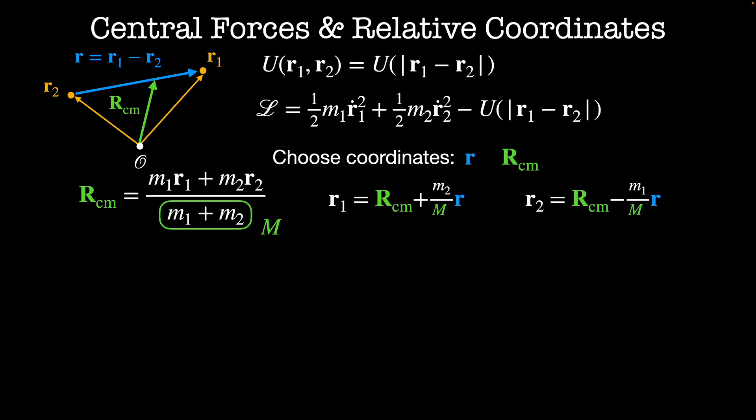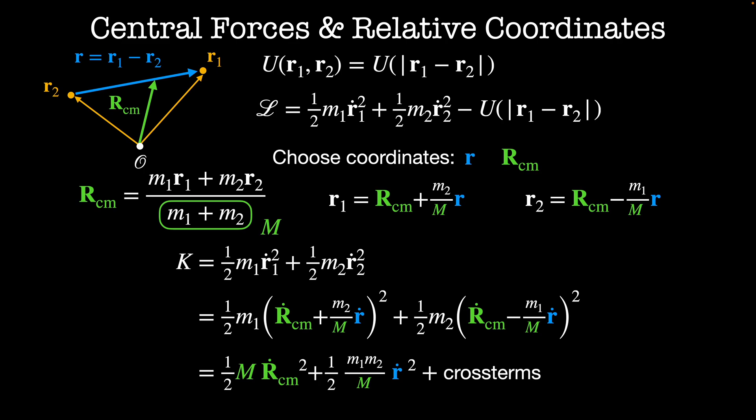Then we'll use these definitions to rewrite the kinetic energy, which was 1/2 m1 r1 dot squared plus 1/2 m2 r2 dot squared as 1/2 m1 times (Rcm dot plus m2 divided by the total mass times r dot) quantity squared plus 1/2 m2 times (Rcm dot minus m1 over the total mass times r dot) quantity squared. When we expand this out,